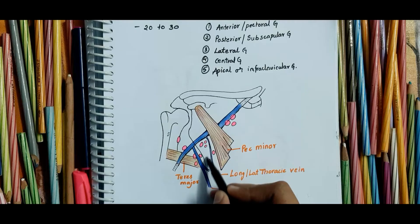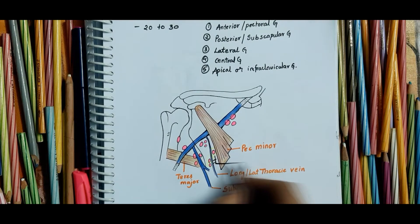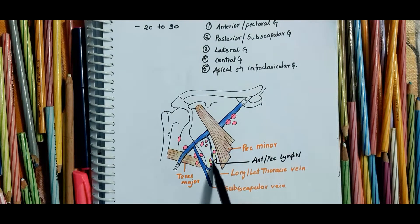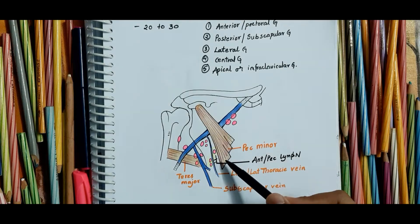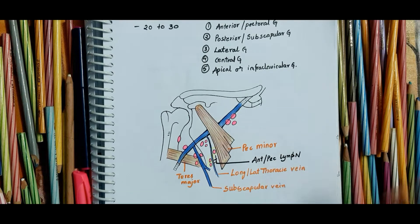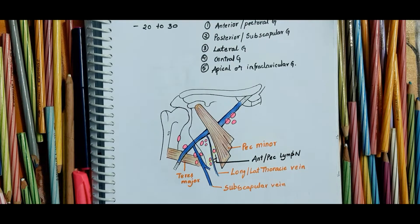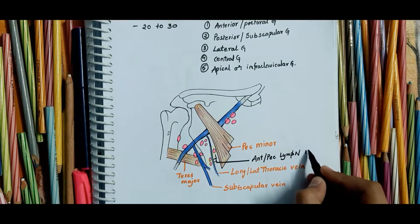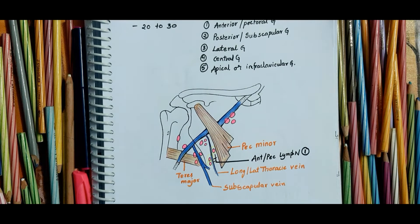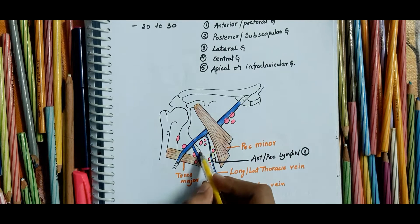Now coming to the first group, the anterior or pectoral group of lymph nodes. They lie along the lateral thoracic vein at the lower border of the pectoralis minor muscle. They receive lymph from the upper trunk and the anterior half of the breast. The tail of Spence is in direct contact with these lymph nodes, so cancer involving the axillary tail of the breast may be misdiagnosed as an enlarged lymph node.